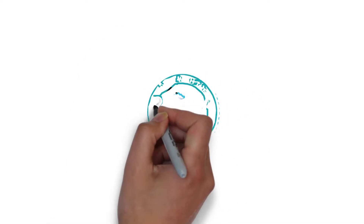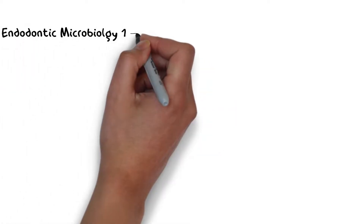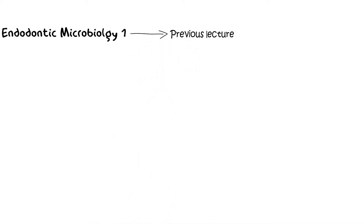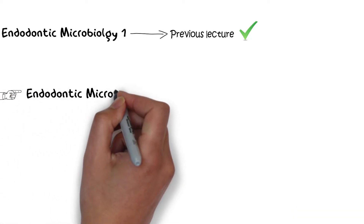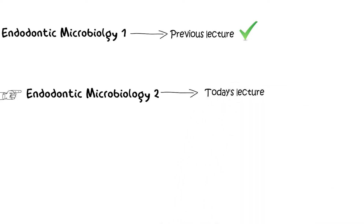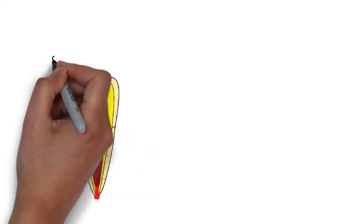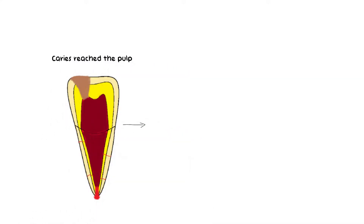Hello and welcome back everyone. In the previous lecture on endodontic microbiology, we learned about how a vital pulp defends itself from a bacterial attack and how bacteria eventually gain access to the pulp. Today we'll be discussing more about the pathogenicity. Once the bacteria overpower the defenses of the pulp and gain access to it, they will eventually cause pulpal necrosis.